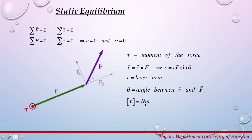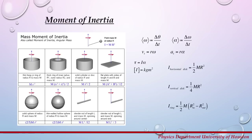Units for torque are Newton meters. Moment of inertia is a mass property of a rigid object that depends on the torque needed so that the object will attain a desired angular acceleration about an axis of rotation. It depends on the shape of the object, the mass, and it is different around different axes of rotation. For this rod, the moment of inertia is different because we changed the axis of rotation.